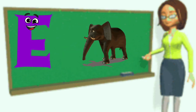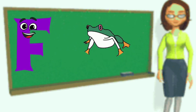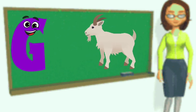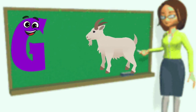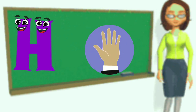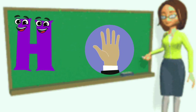E is for Elephant, E-E-Elephant. F is for Frog, F-F-Frog. G is for Goat, G-G-Goat. H is for Hand, H-H-Hand.